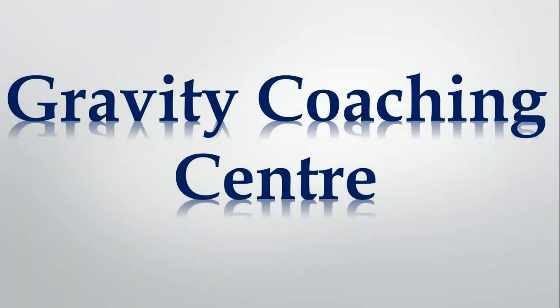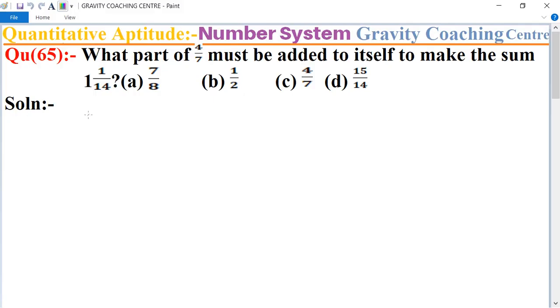Welcome to our channel Gravity Coaching Center. Quantitative Aptitude chapter Number System, question number 65: What part of 4/7 must be added to itself to make the sum 1 whole number 1/14?